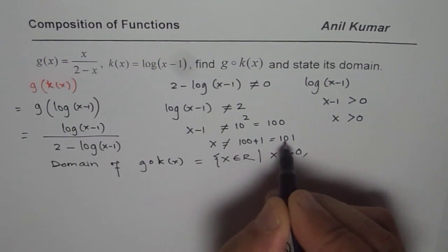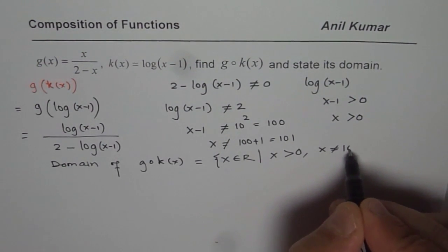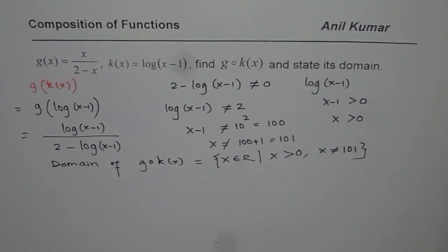And this value is greater than 0 but it should not be equal to 101. That is how you get restriction.